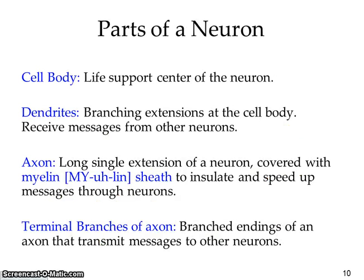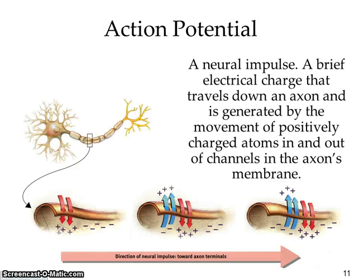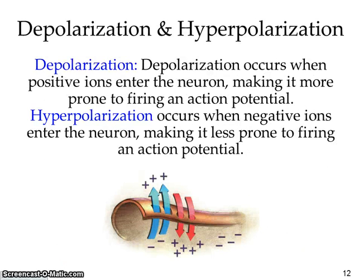Action potential is the neural impulse — a brief electrical charge that travels down your axon and sends the message along. Depolarization occurs when positive ions enter the neuron, making it more prone to firing. So depolarization, with its positive ions, is going to make the neuron more prone to actually firing.